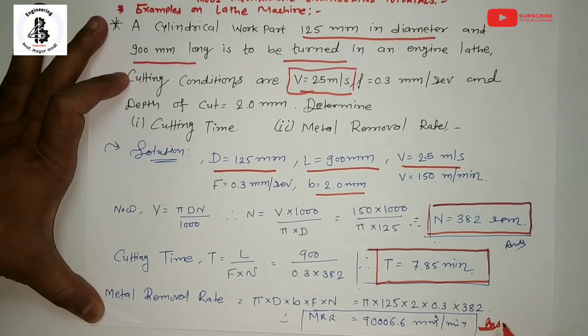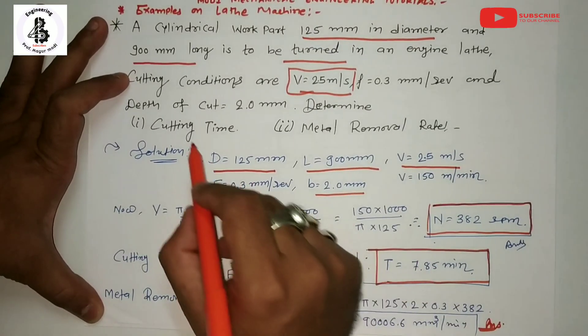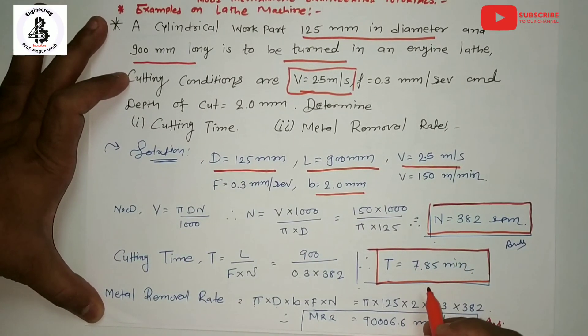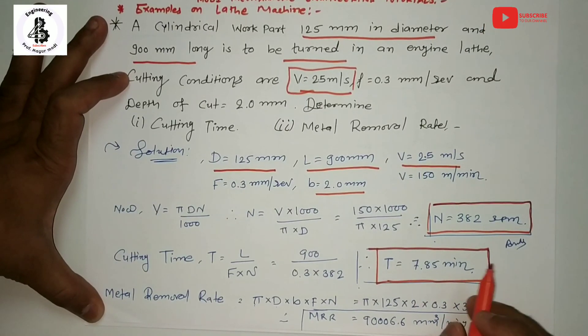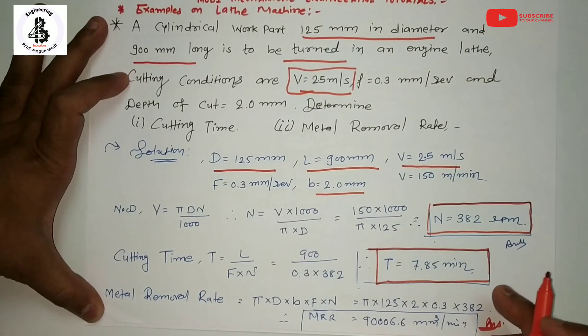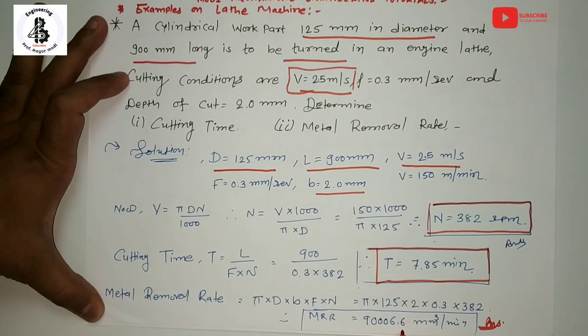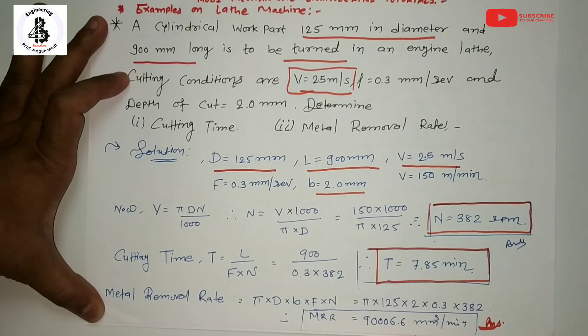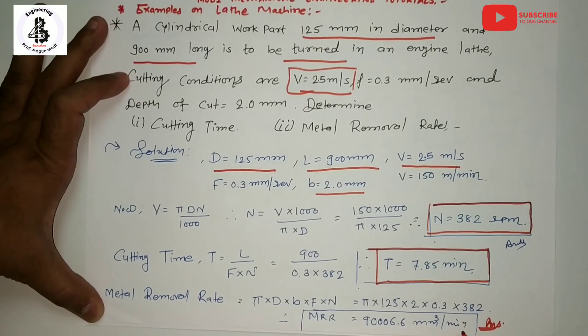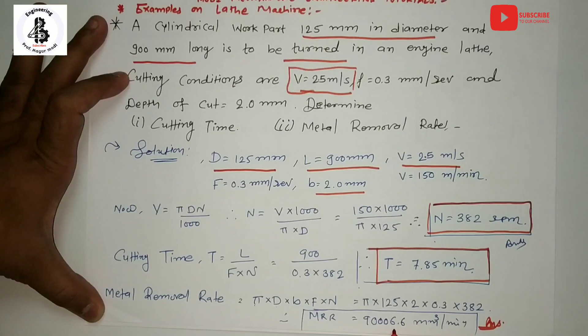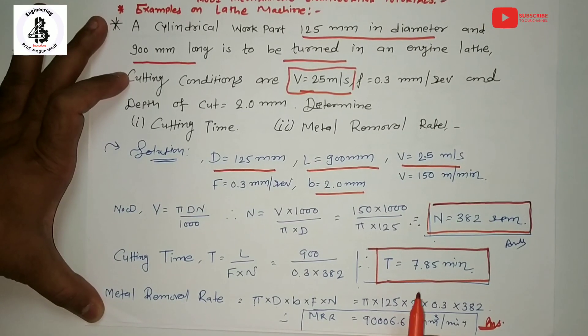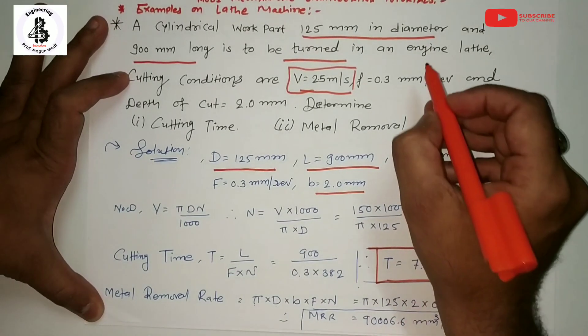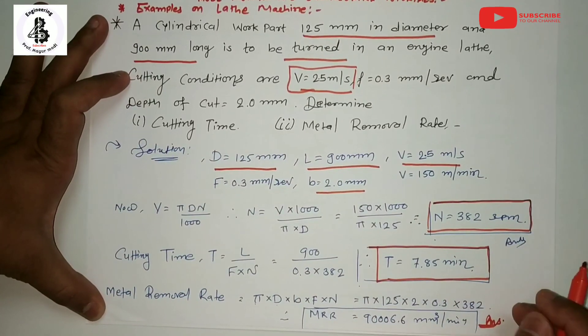So basically I am interested in finding the cutting time. Cutting time is 7.85 minutes required to cut the materials for these parameters, and the metal removal rate is 90006.6 mm³ per minute. Per minute this much amount of material is being removed by the turning operations with the engine lathe.